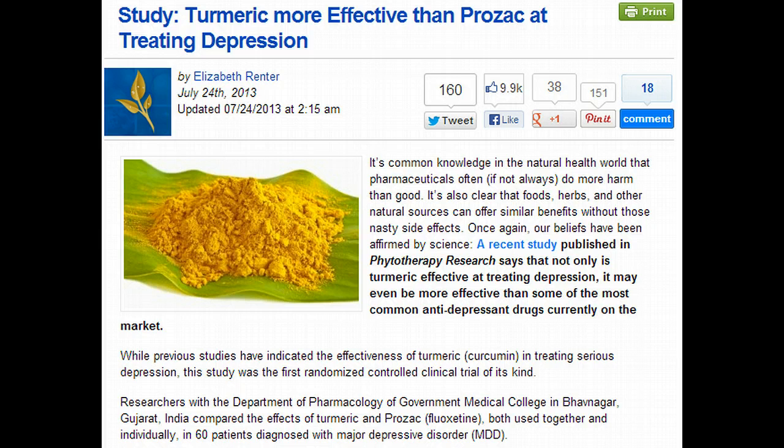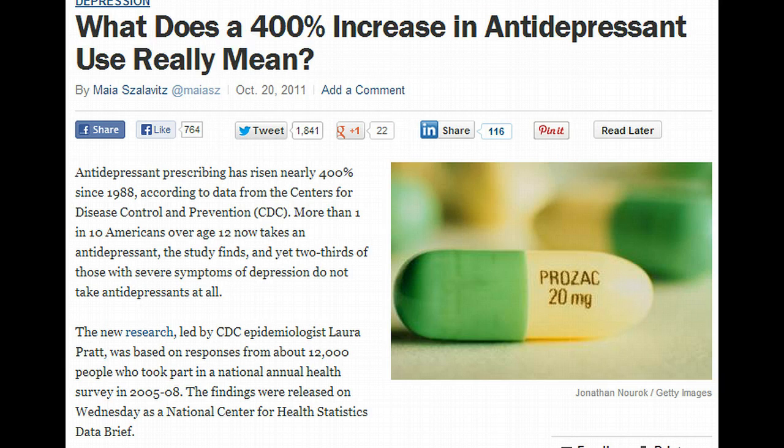Despite recent peer-reviewed studies proving that curcumin, the active ingredient in turmeric, is more effective than Prozac at treating depression, the depression industrial complex continues to dominate. We've seen a 400% increase in antidepressant use amongst Americans, so now 10-12% of Americans are now on drugs like Prozac.